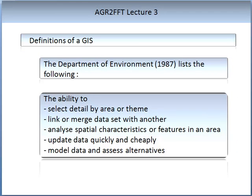There are several ways of potentially defining GIS. The Department of Environment lists the following: the ability to select detail by area or theme; link or merge a data set with another; analyse spatial characteristics or features in an area; update data quickly and cheaply; and model data and access alternatives.